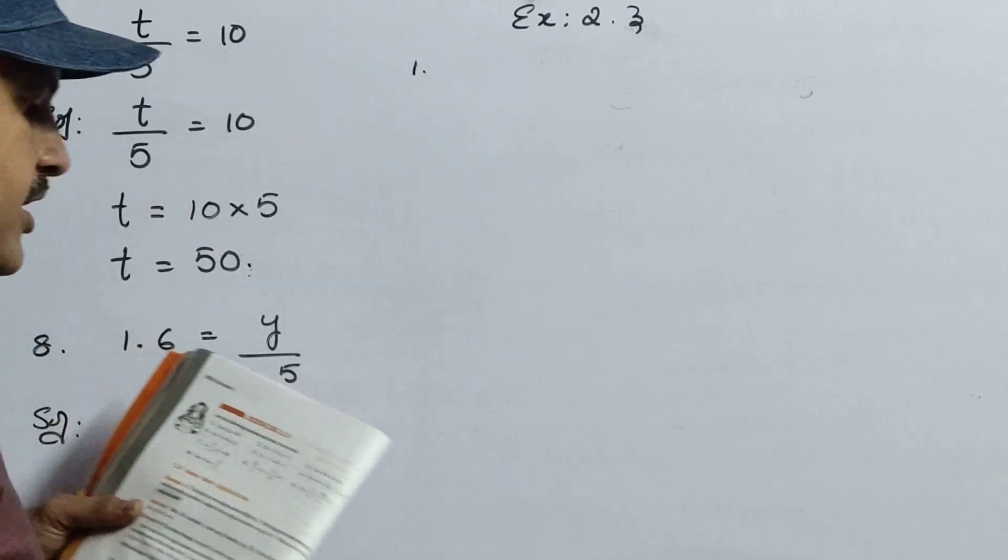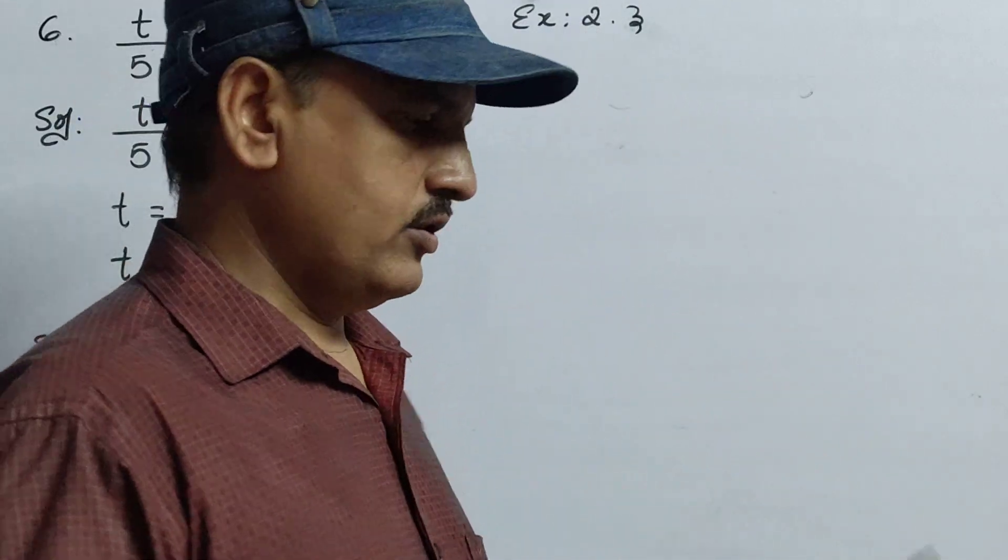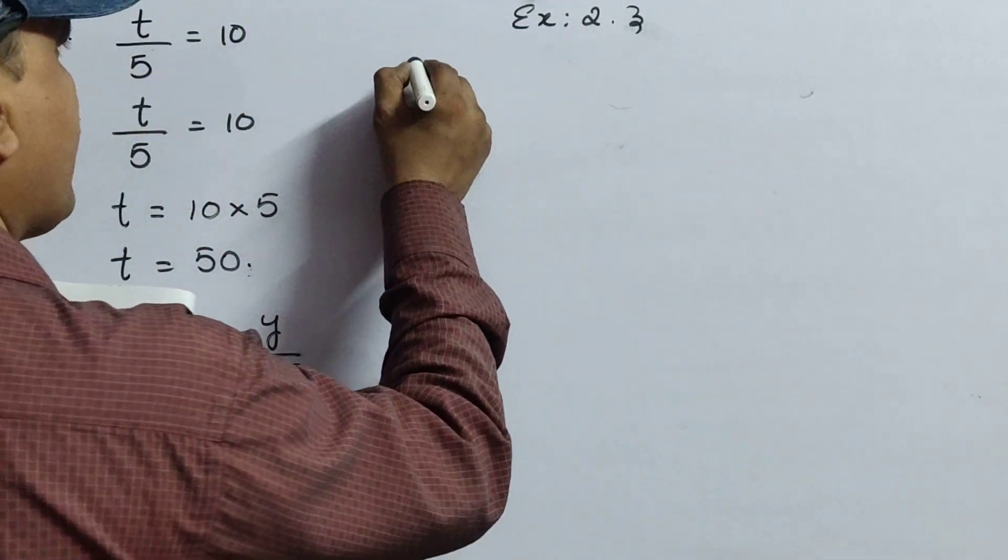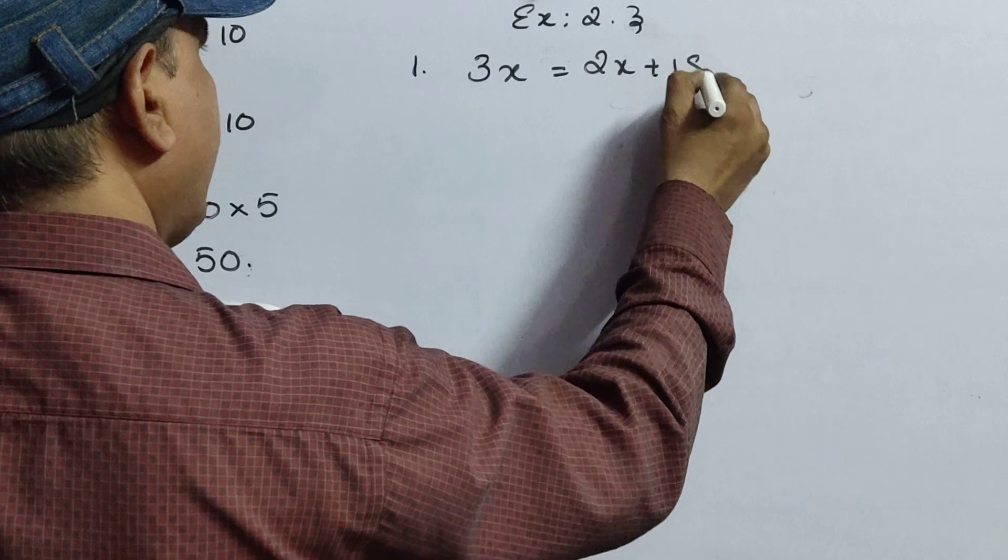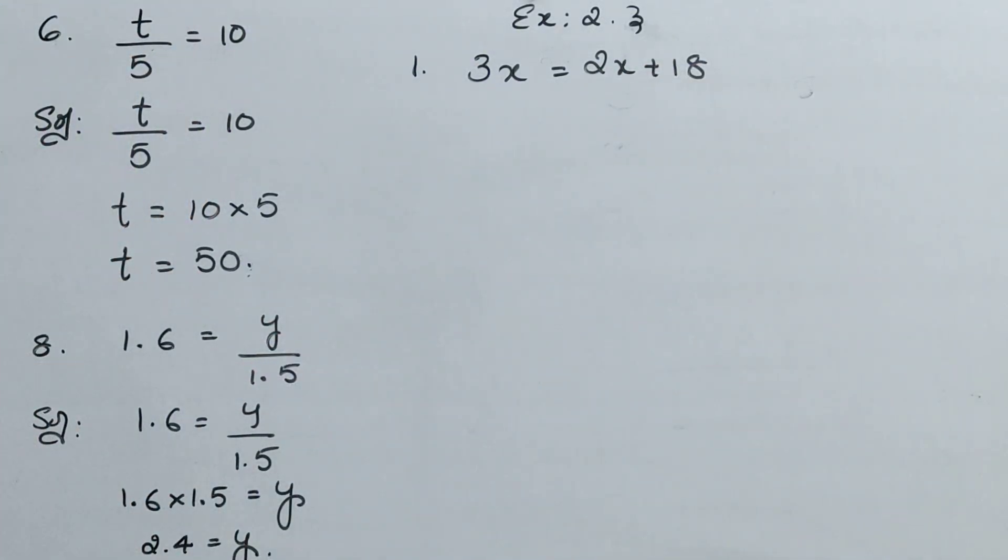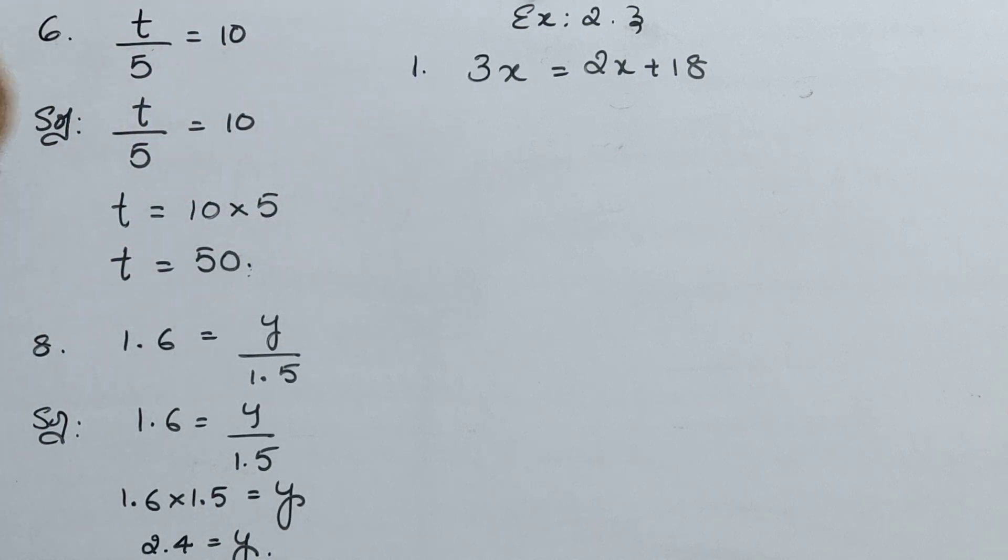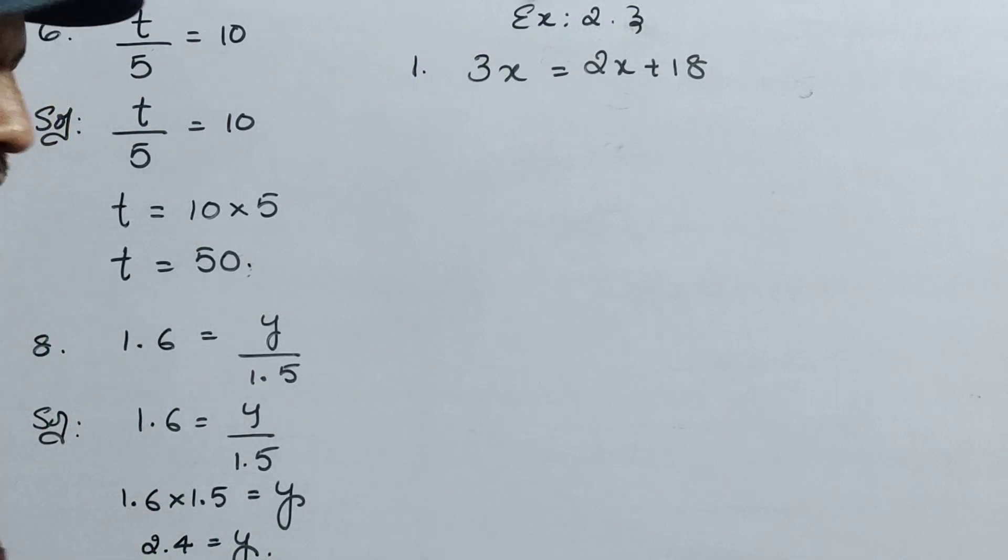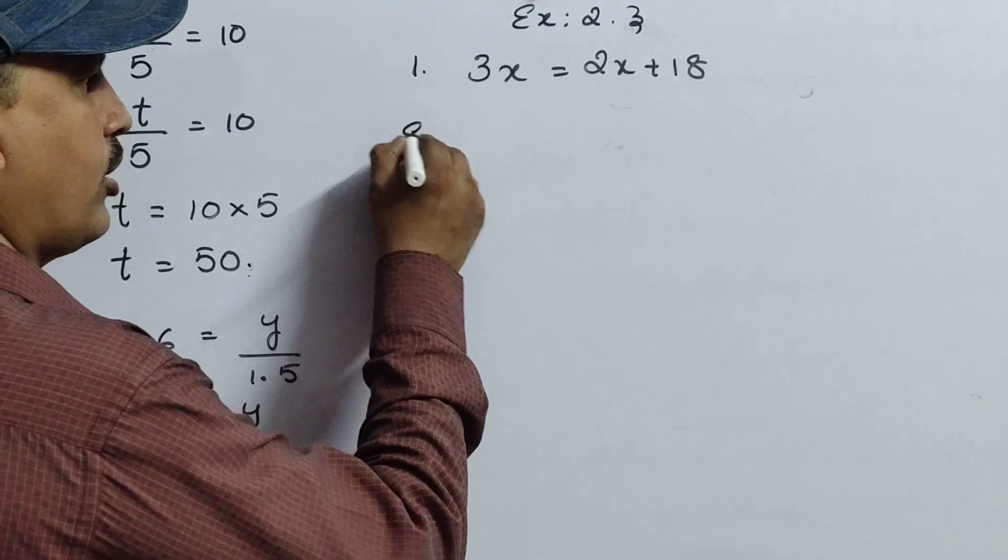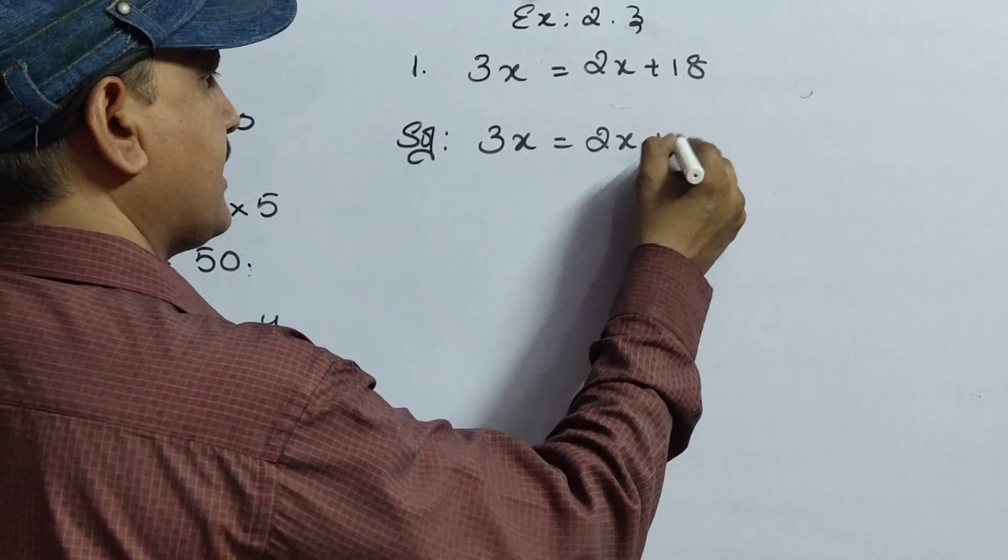Solve the following equations and check your results. See here, what is the first question given here? 3x equals to 2x plus 18. So if you clearly observe, the before exercise and this exercise, there we observe only one side one variable, either this side left side or right side. But here you observe, left hand side also variable is there, right hand side also variable is there. Now that time what to do? It's very easy. First write: 3x equals to 2x plus 18.